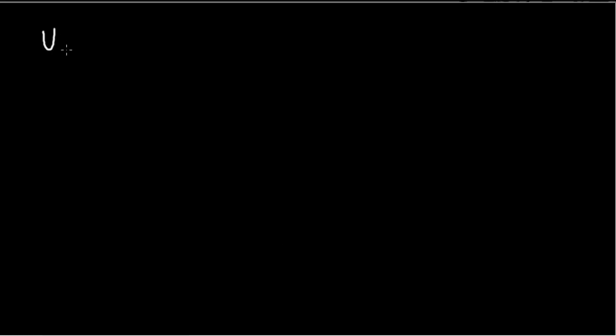Here, we'll be using a Cobb-Douglas utility function. Our example function would be u, which is a function of x sub 1 and x sub 2, equal to x sub 1 raised to 0.6 times x sub 2 raised to 0.4.